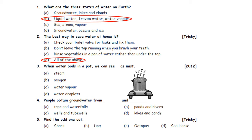Question three: When water boils in a pot, we can see dash as mist. Option A. Steam. Option B. Oxygen. Option C. Water vapor. Option D. Water droplets. When water boils in a pot, we can see water droplets as mist. The water converts into steam, and we will see water droplets as mist. So option D is the correct answer.